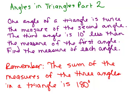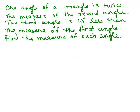We're going to be solving this word problem using the fact that the sum of the measures of the three angles in a triangle is 180 degrees. Here's a word problem involving angles in a triangle. One angle of a triangle is twice the measure of the second angle, and the third angle is 10 degrees less than the measure of the first angle. Find the measure of each angle.